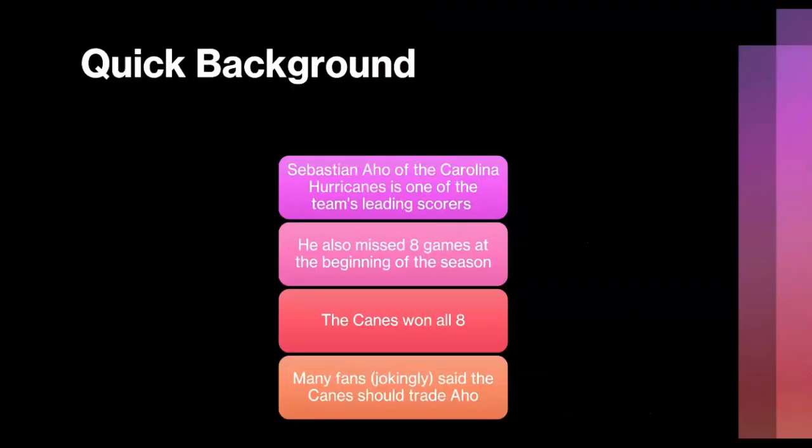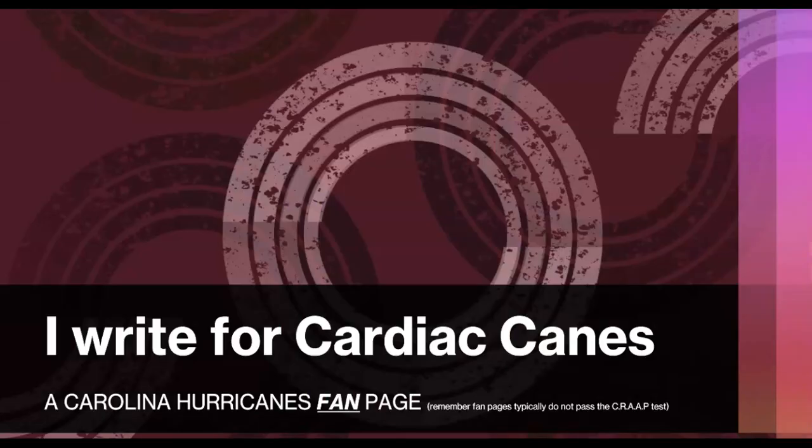A quick background: Sebastian Ajo of the Carolina Hurricanes is one of the team's leading scorers. He also missed about eight games at the beginning of the season. The Canes won all of those eight games, and many fans jokingly said the Canes should trade Ajo. I write for the Cardiac Canes, which is a Carolina Hurricanes fan page. Fan pages typically do not pass the CRAP test.